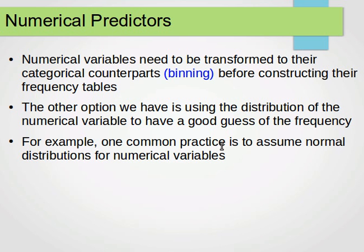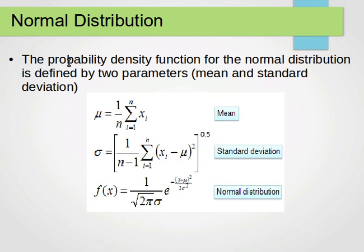One common practice is to assume normal distributions for numerical variables. For normal distributions, the probability density function is defined by two parameters: the mean and the standard deviation. The mean is the sum of all values divided by number of values. The standard deviation is calculated as the square root of one over n minus one times the summation of x_i minus mu squared, where mu is the mean. The function for the normal distribution is f(x) = 1 over square root of 2 pi sigma squared times e to the power of minus (x minus mu) squared over 2 sigma squared.